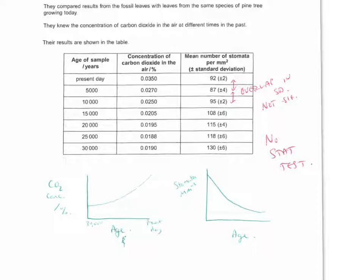The next question asks us to describe the data in the table. If you're ever describing data, I would always draw a sketch graph to help you describe it. So we can see as age comes close to the present day, so as we're going in this direction on the table, the carbon dioxide concentration is increasing. And you can see that all the time through there, apart from here. At the next one, we can also see as we get close to the present day, the mean number of stomata per millimeter squared decreases, and it looks like it's starting to level off as we get close to the present day on the last 5,000 to 10,000 years.